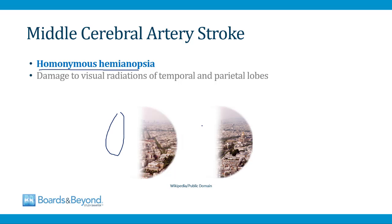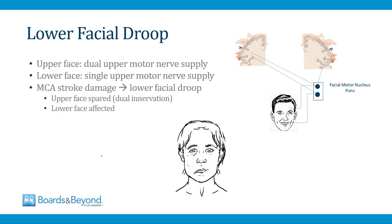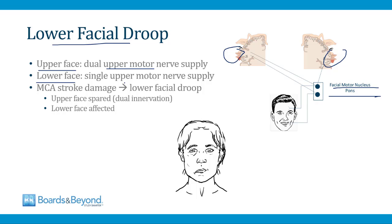Homonymous hemianopsia occurs in MCA strokes because of damage to visual radiations running in the temporal and parietal lobes. Patients with MCA strokes develop facial droop, but it's usually lower facial droop that spares the forehead. This is because the upper face, including the forehead, has a dual upper motor nerve supply from both halves of the brain, while the lower face has only a single contralateral upper motor neuron supply. So when an MCA stroke damages half of the cortex, only lower facial droop results and the forehead is spared.